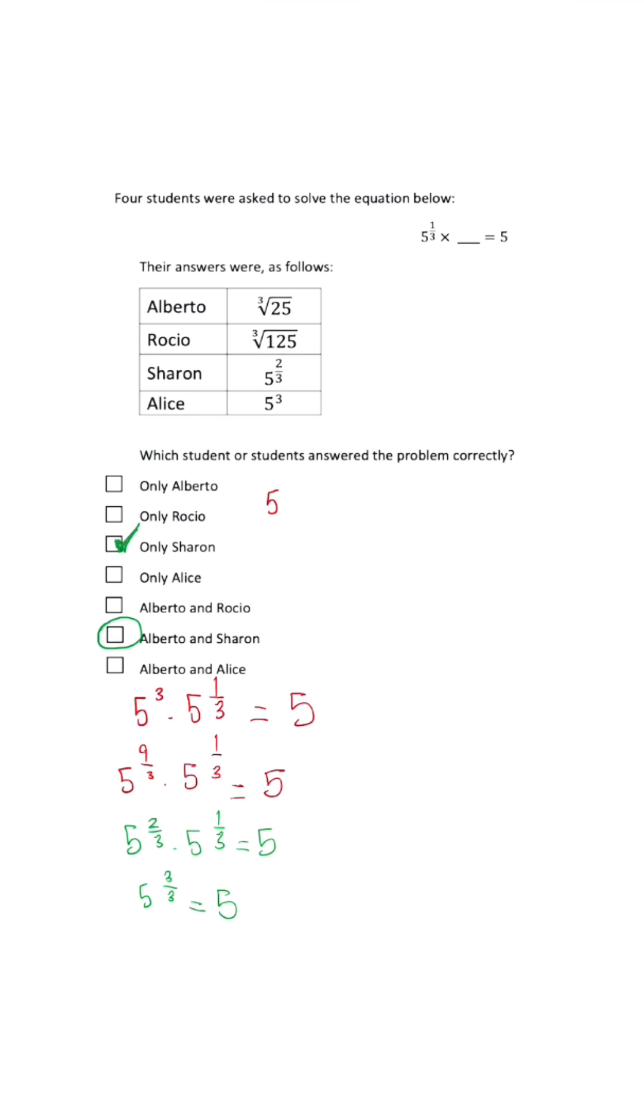So we have 5 to the 1st power, which is the same as 3 over 3 times 5 to the 1/3. This is not equal to 5. We're going to have 5 to the 4 over 3 power equals 5, which is also incorrect.